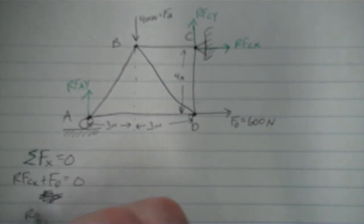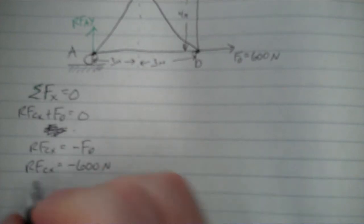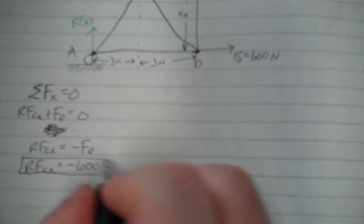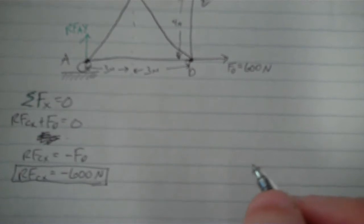Actually I'm going to do that the other way. RFCX is equal to negative FD. RFCX equals negative... I know FD was 600 newtons, so that's negative 600 newtons, or 600 newtons to the left. That's my first reaction force right there.